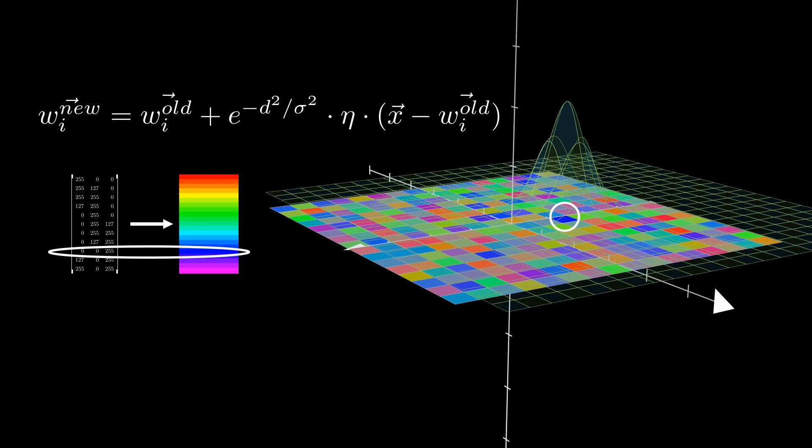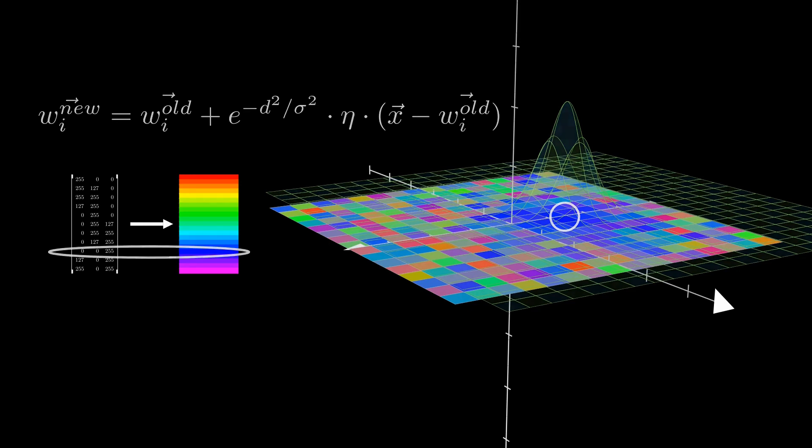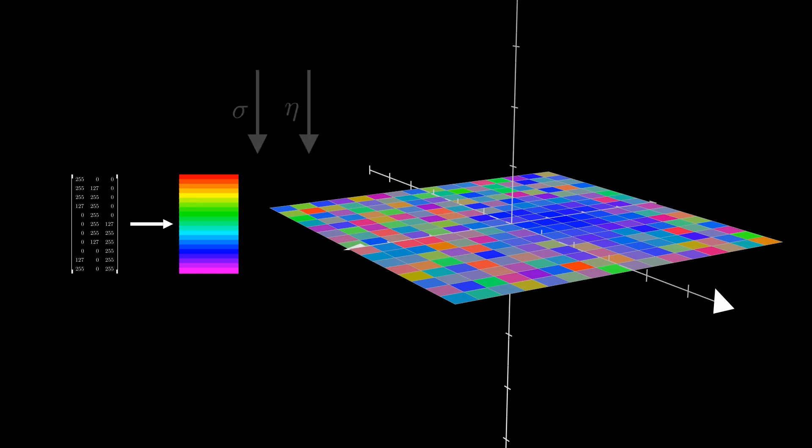When a node's weights are updated, they become more similar to the input, so that they will respond better to similar samples in the future. The eta and sigma values are updated to decay exponentially from their initial values on each iteration. The process is repeated until the SOM reaches a steady state.